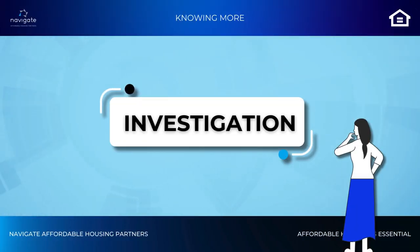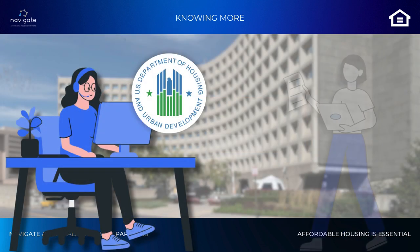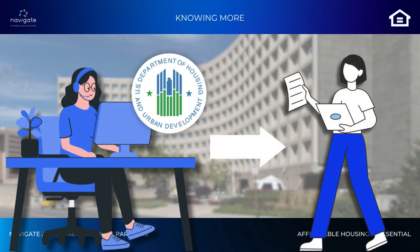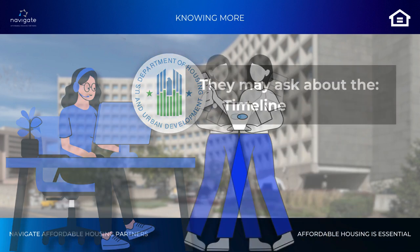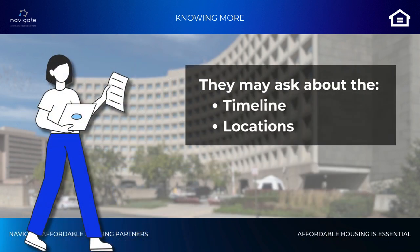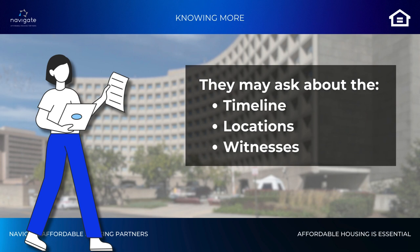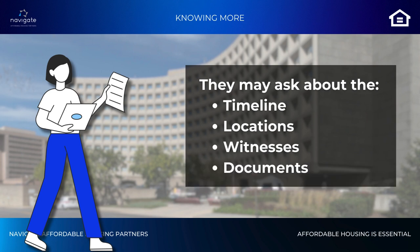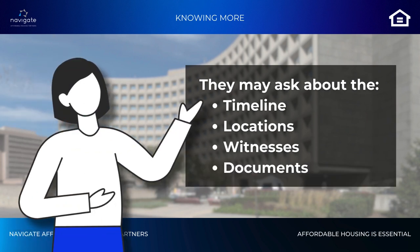Step 2: The Investigation. Once your complaint is filed, HUD assigns investigators. They might ask for more details like a timeline of events, locations, witnesses, and any relevant documents. Both parties will have a chance to respond.